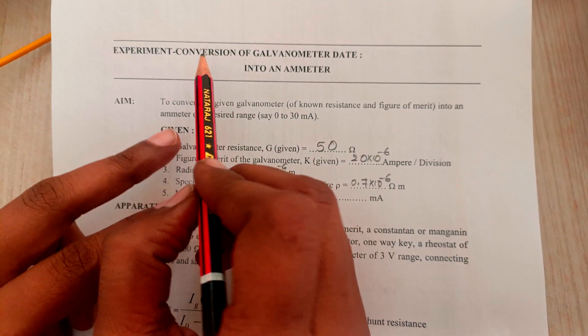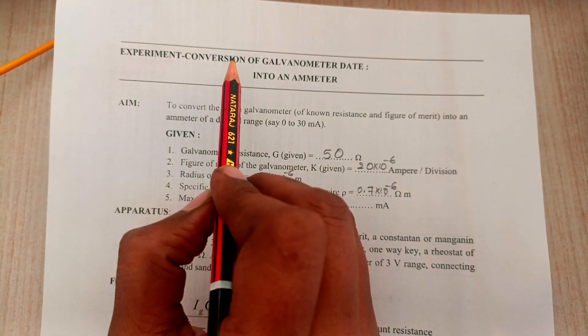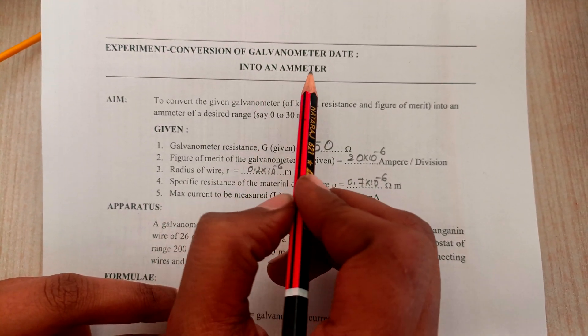Hello students, we are going to do physics practical number 1, that is conversion of galvanometer into ammeter.